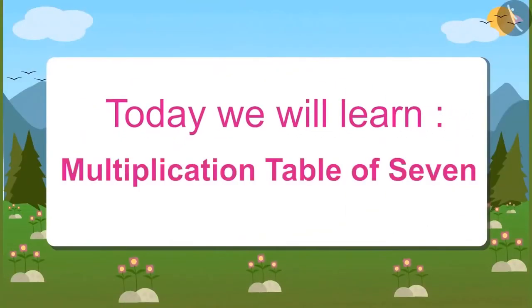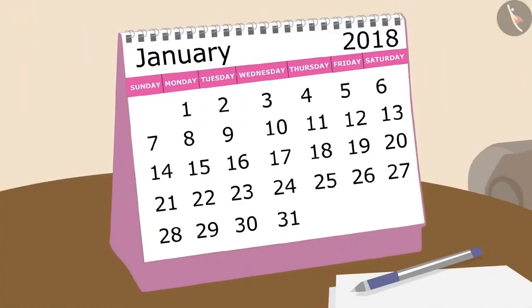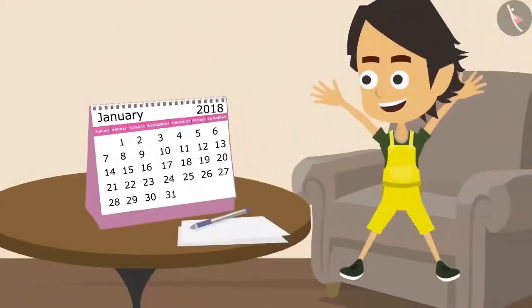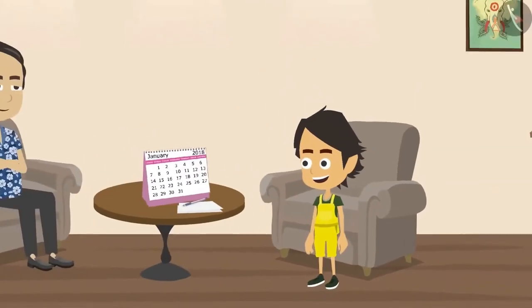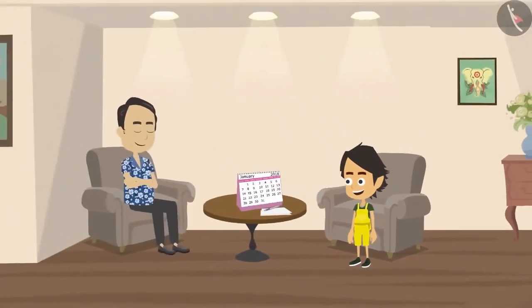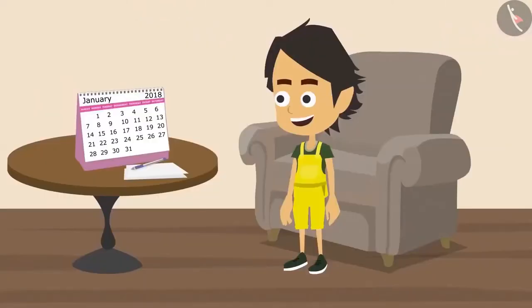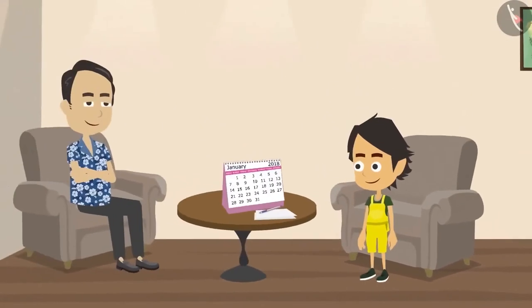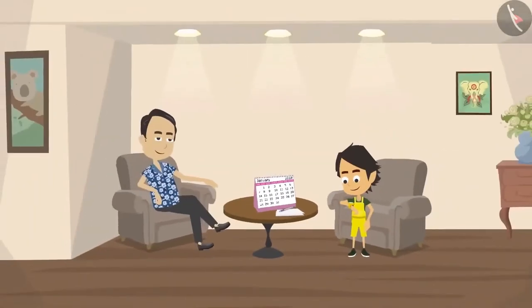Today we will learn the multiplication table of 7. Today is Sunday and Ayushman is very happy because every Sunday he goes for an outing with his parents. Papa and Ayushman are ready to go out and are waiting for mummy.